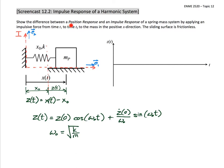Now let's define what we mean by a position response. A position response is where you take a system that's at rest and then change its initial position or orientation. We've drawn this mass so that it's extended beyond the equilibrium position, which is the resting length of the spring. If we let this go, the mass is going to oscillate back and forth about this equilibrium position. We've given it an initial position but no initial speed, so we're only working with the cosine term in the solution, which is a function of the natural frequency and time.